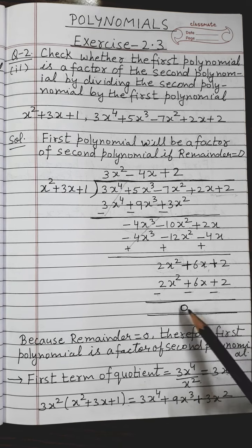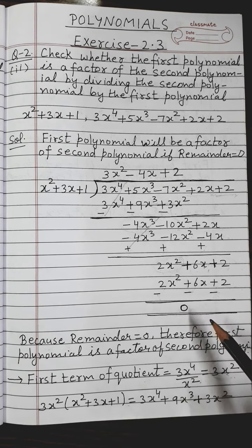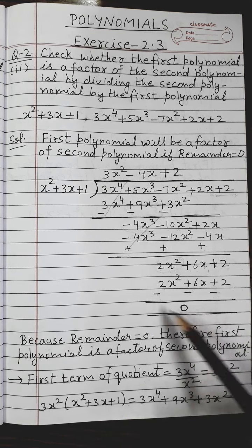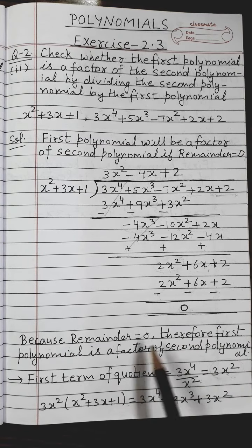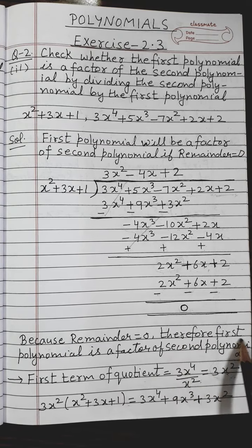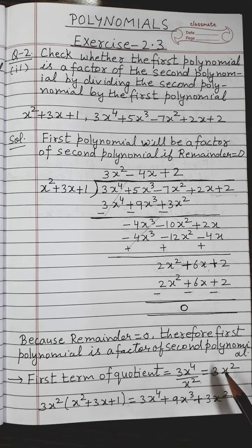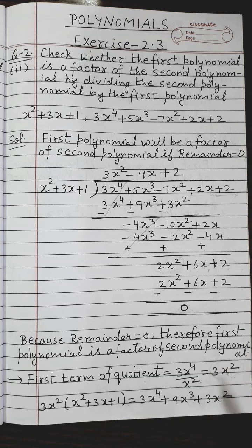The remainder has come out to be 0. Therefore, the first polynomial is a factor of the second polynomial. This is how your question is done. I hope it is clear to you. Bye bye.